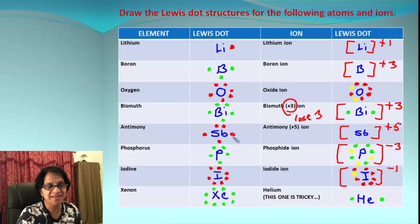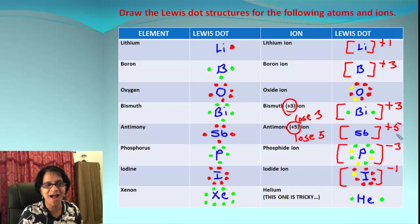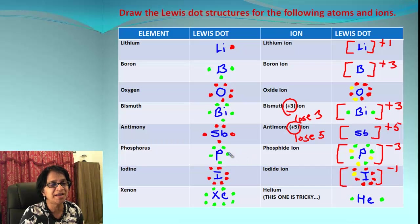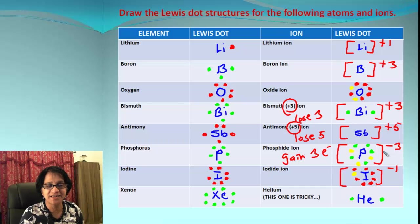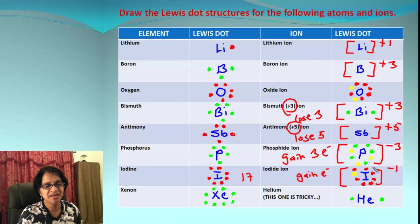Antimony is also in group number 15. When antimony forms a plus five ion, it loses all five electrons — there are no electrons remaining around it and the charge is positive five. Phosphorus is also in group 15, so it has five electrons around P. The phosphide ion gains three electrons, making the octet complete, with a charge of negative three. Iodine is in group 17 with seven valence electrons; the iodide ion gains one electron to complete its octet, giving a charge of negative one.